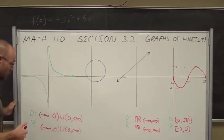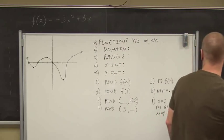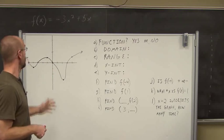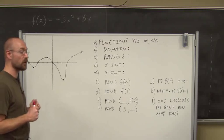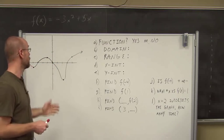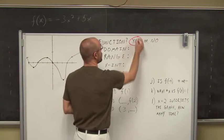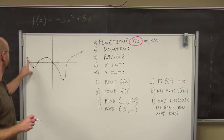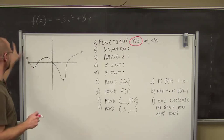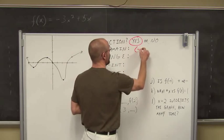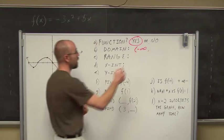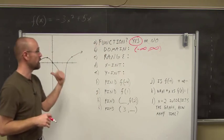We're going to recall how we deal with function notation. Looking at this graph, can we determine if it's a function? Using the vertical line test, we can see it only intersects the graph in one spot no matter where I put the vertical line. So yes, it is a function. For the domain, this arrow continues to the left forever — negative infinity — and the other side continues to positive infinity. So the domain is all real numbers, from negative infinity to positive infinity.